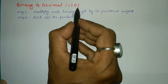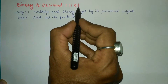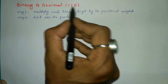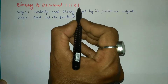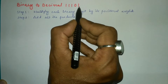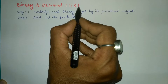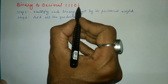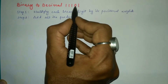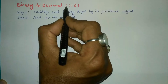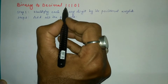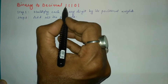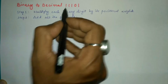You can start counting the positional weights of the given binary number from the right-hand side. The positional weight of the rightmost bit is 0, then 1, 2, 3, 4. So the leftmost bit has a positional weight of 4.